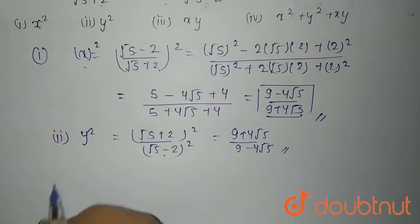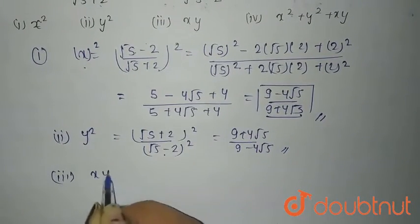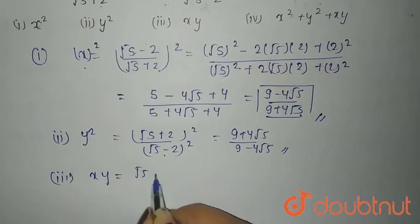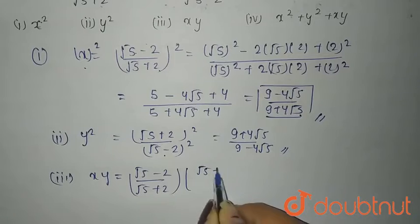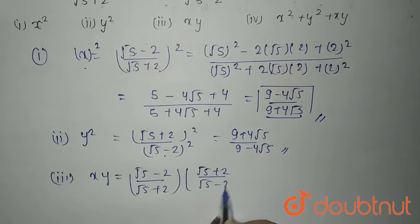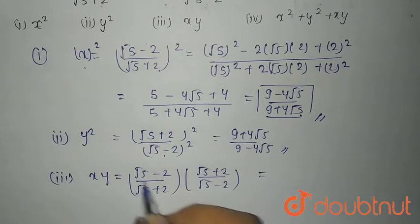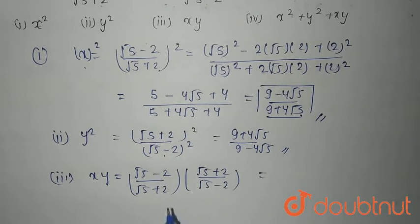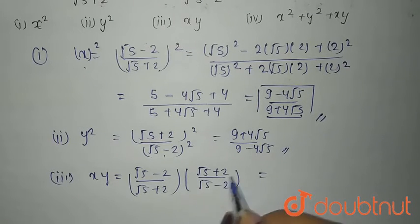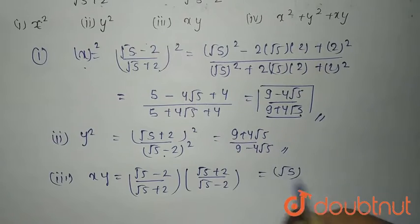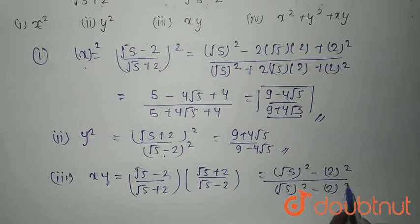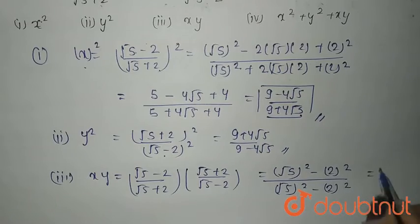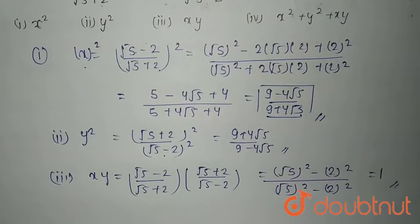Now, third is x times y. So, x times y equals (√5 minus 2) upon (√5 plus 2), multiplied by (√5 plus 2) upon (√5 minus 2). Multiplying, you get (a plus b)(a minus b), which by the identity a² minus b² gives (√5)² minus 2², divided by (√5)² minus 2². This gives you 1. So, xy equals 1.